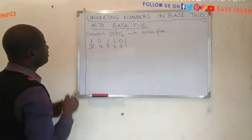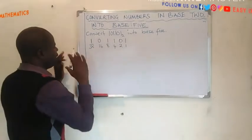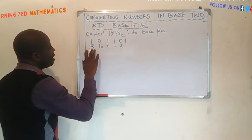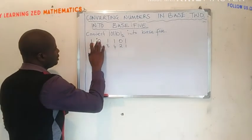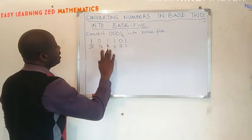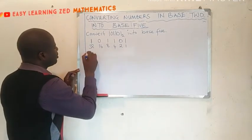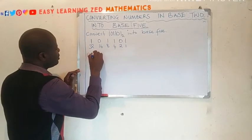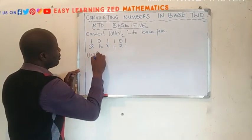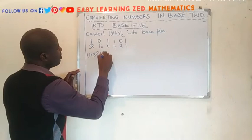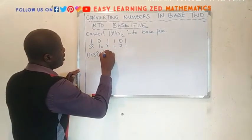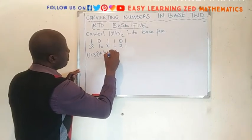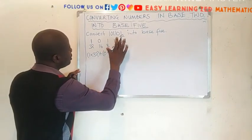Now let's find the product of the number and its place value. So I'm going to multiply each digit by its place value. Open bracket, 1 times 32, close bracket, plus 0 times 16, plus...